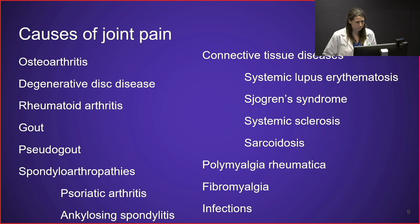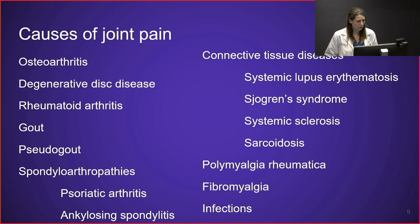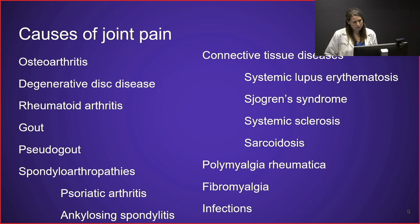There are many different types of joint pain and causes. These include osteoarthritis, degenerative disc disease of the spine, rheumatoid arthritis, gout, and pseudogout. There's also a group called spondyloarthropathies, which include psoriatic arthritis and ankylosing spondylitis. Then there are autoimmune connective tissue diseases such as systemic lupus erythematosus, Sjogren's syndrome, systemic sclerosis, and sarcoidosis. More generalized pain conditions include polymyalgia rheumatica and fibromyalgia, and genetics and infections can also lead to joint pain.